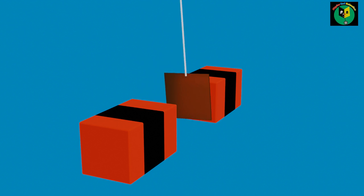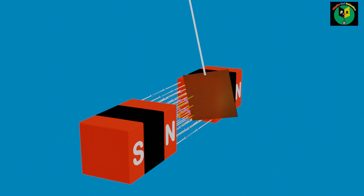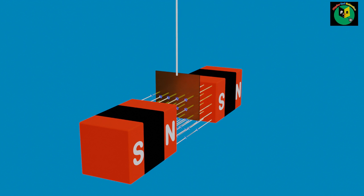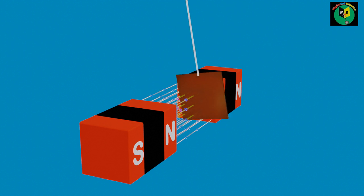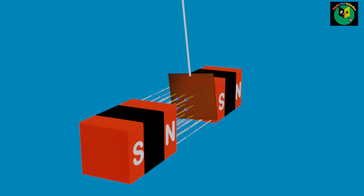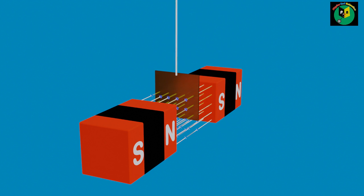Now let's create a magnetic field directed from north to south in the path of the oscillating metallic plate. As visible in the animation, when the metallic plate passes through the magnetic field lines, the plate loses its momentum and stops oscillating after some time. This type of reduction in oscillation after some time is called damping.